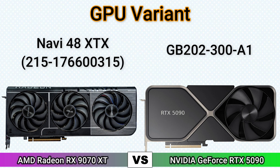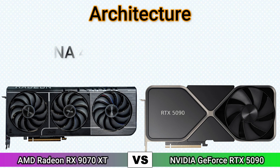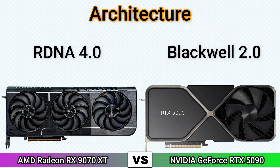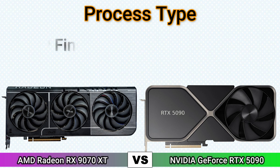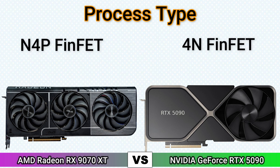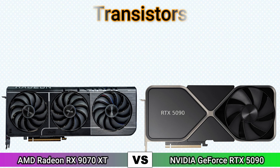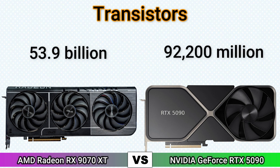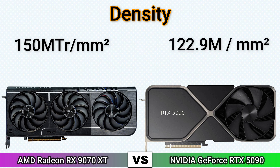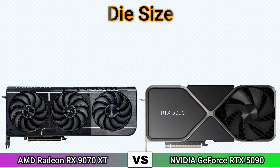GPU Variant Architecture. Process Type, Process Size. Classes, Transistors. Density. Die Size.